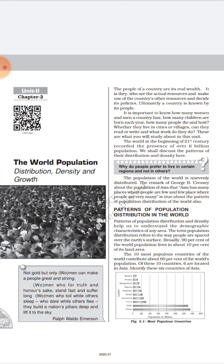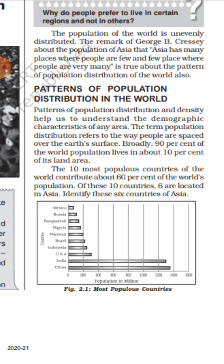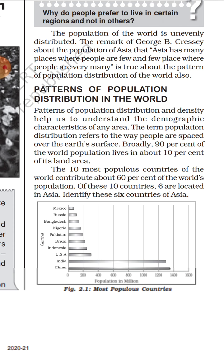The most populous countries of the world contribute about 60 percent of world population, and many of these countries belong to Asia. As you can see in this chart, the first place belongs to China, then India, then the US, Indonesia, Brazil, Pakistan, Nigeria, Bangladesh, Russia, and Mexico. From these 10 countries, China, India, Indonesia, Pakistan, and Bangladesh come from the Asian continent, which satisfies Creser's remark.